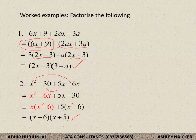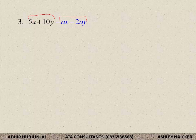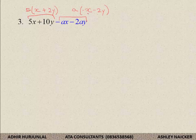This should be getting a bit more difficult. What about a question like this? 5x plus 10y minus ax minus 2ay. I have a black part and a blue part, but sometimes you might have to rearrange — remember that. Let us try to remove common factor from the black and from the blue. Between what is written in black, the common factor is 5, and I am left with x plus 2y. If I take out a as common factor from the blue, I am left with minus x minus 2y. What you would notice is the brackets are not the same — you have to be very careful of this.